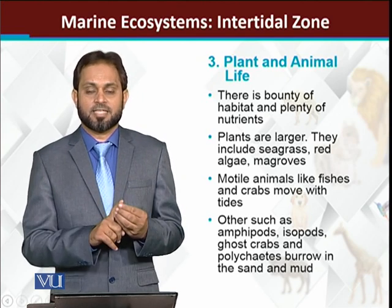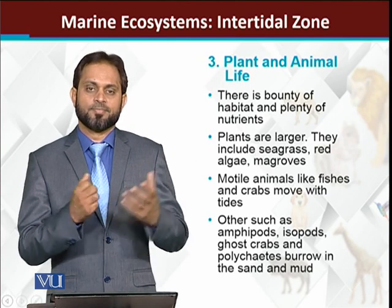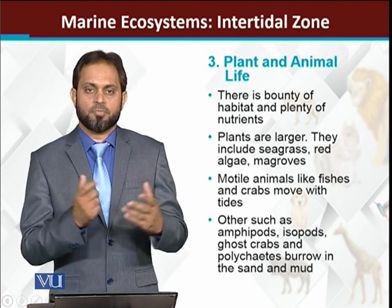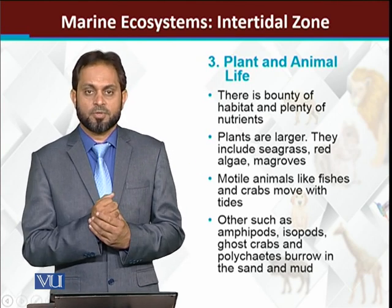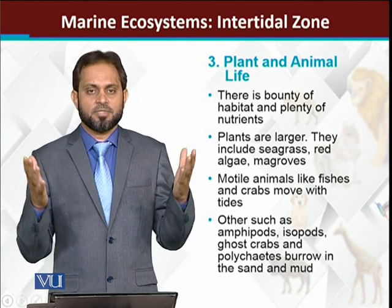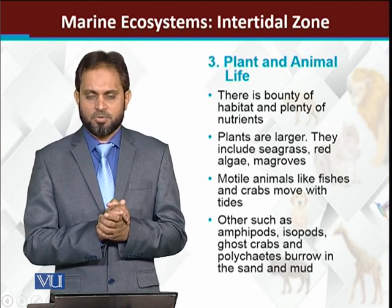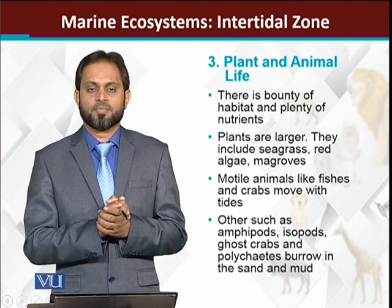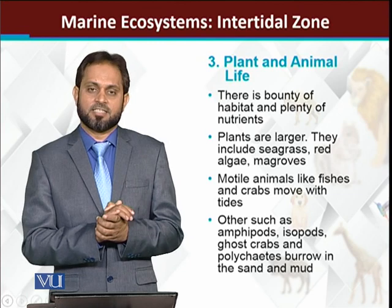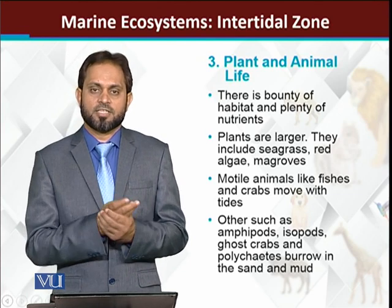Different types of large plants are there — mangroves. You may have heard of mangroves; if we look at Karachi's coastline, mangroves were present there in large numbers but have now been greatly reduced. So mangroves are found here. Red algae is there, sea grasses, and different types of grasses are found in the intertidal zone.